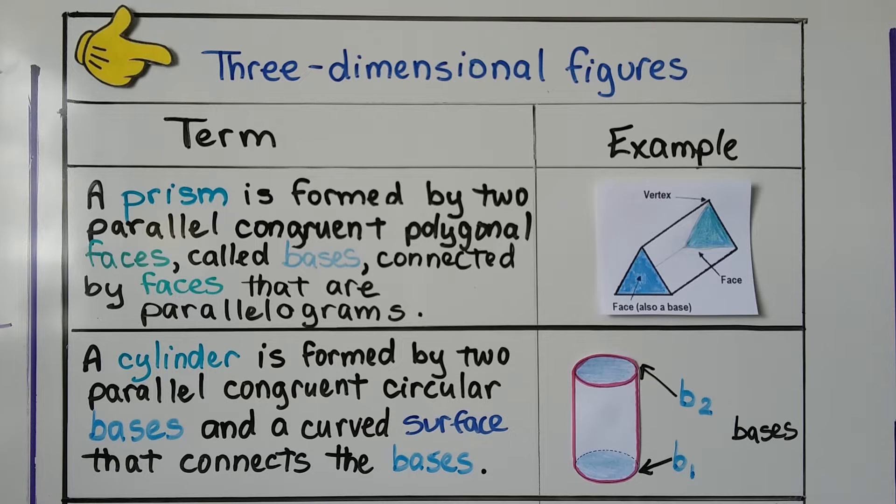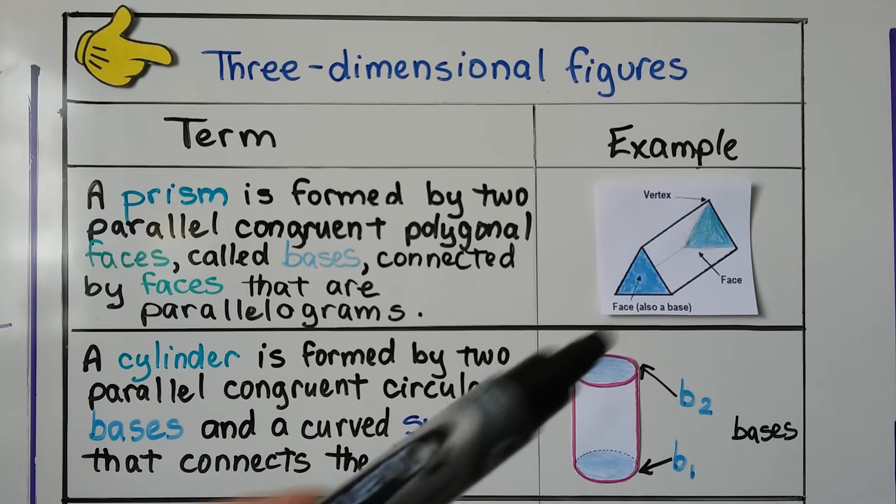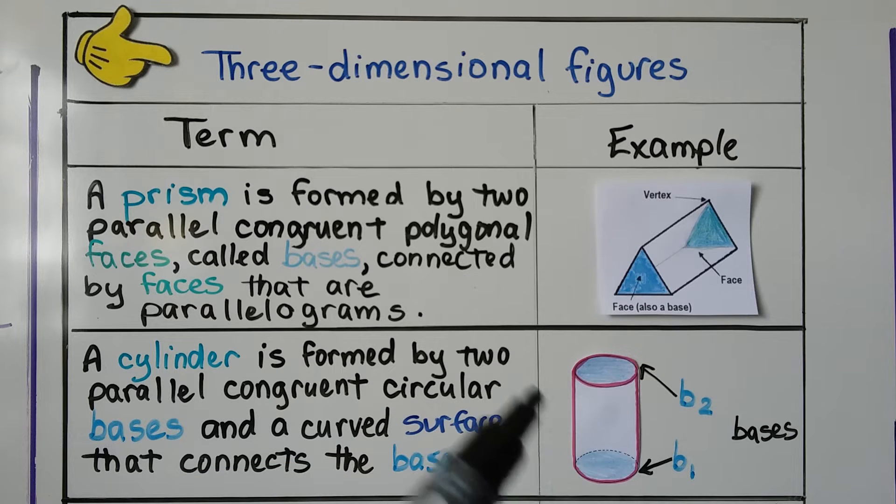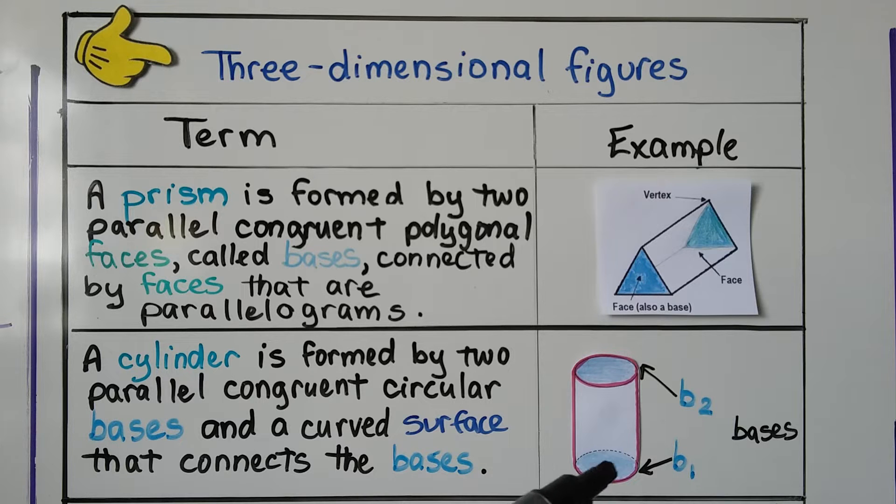A cylinder is formed by two parallel, congruent, circular bases, and a curved surface that connects the bases. So this would be our first base, and we could call it base sub one, and that's our second base, base sub two.